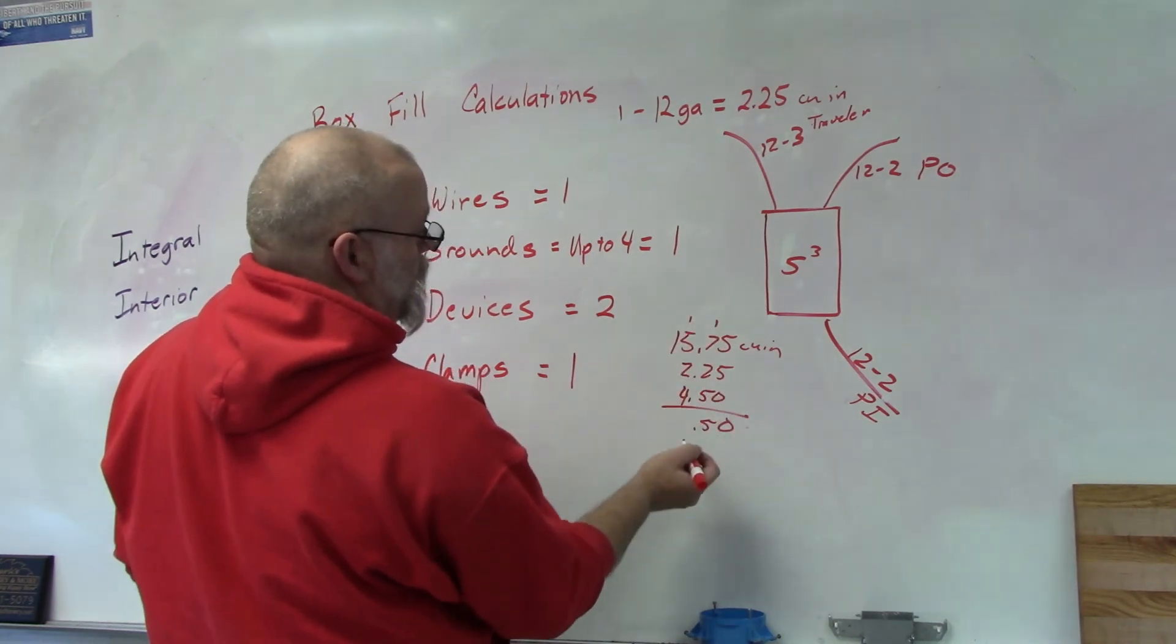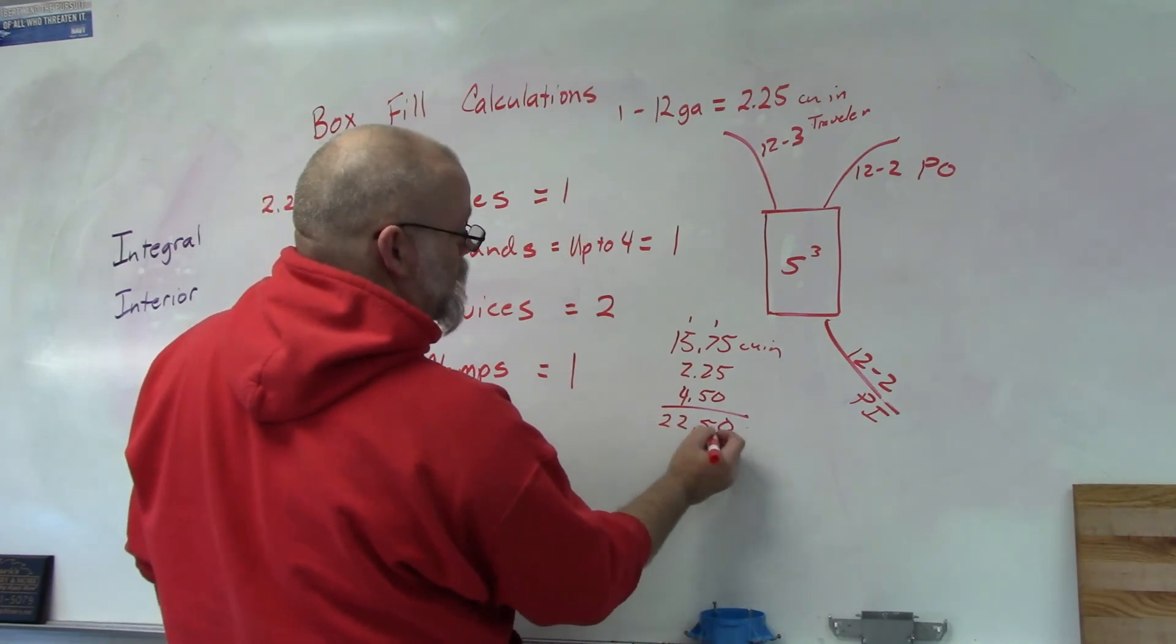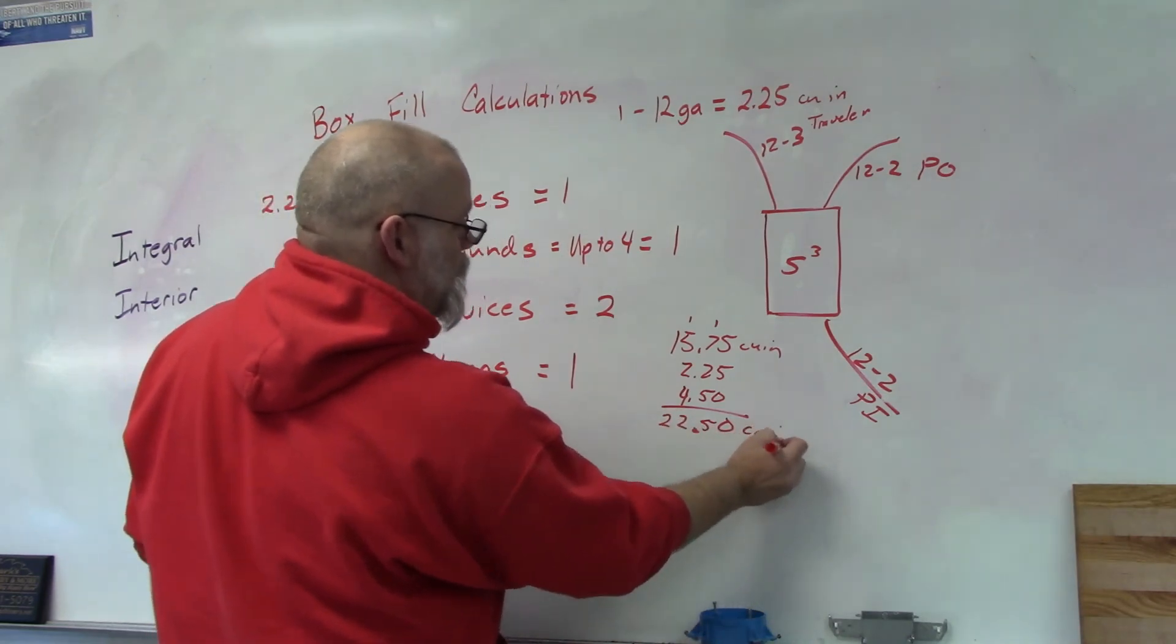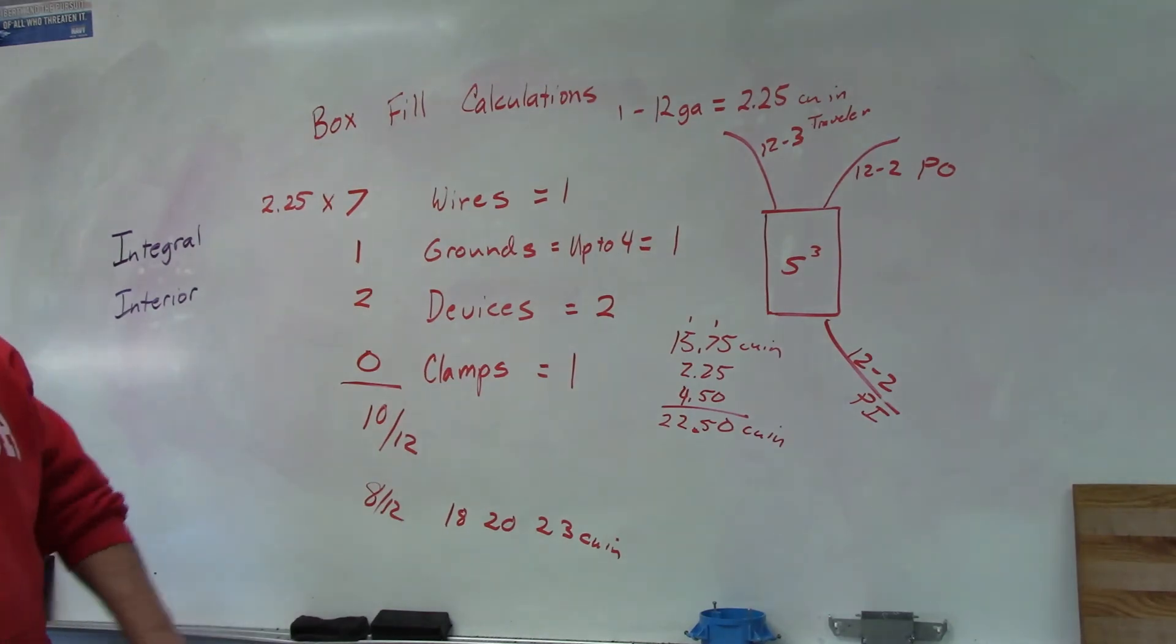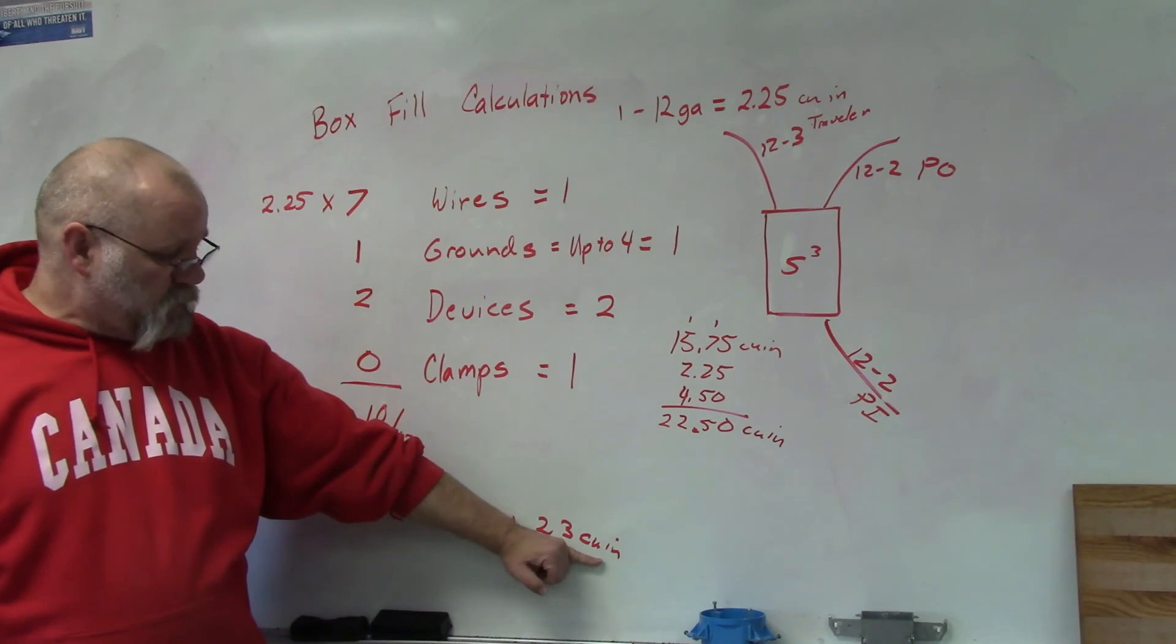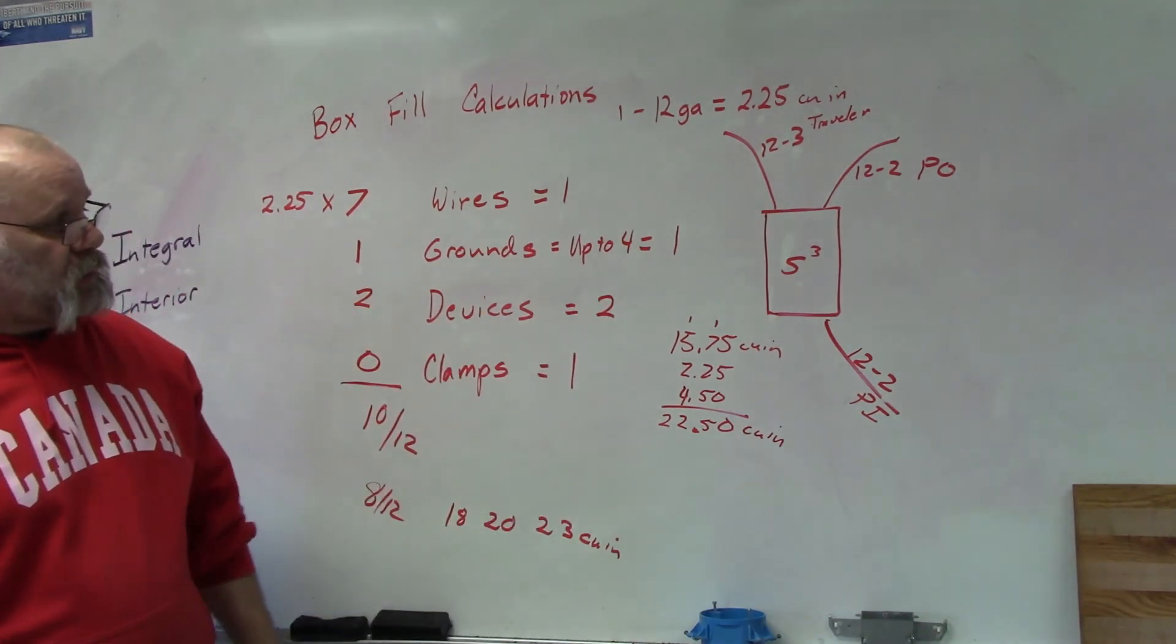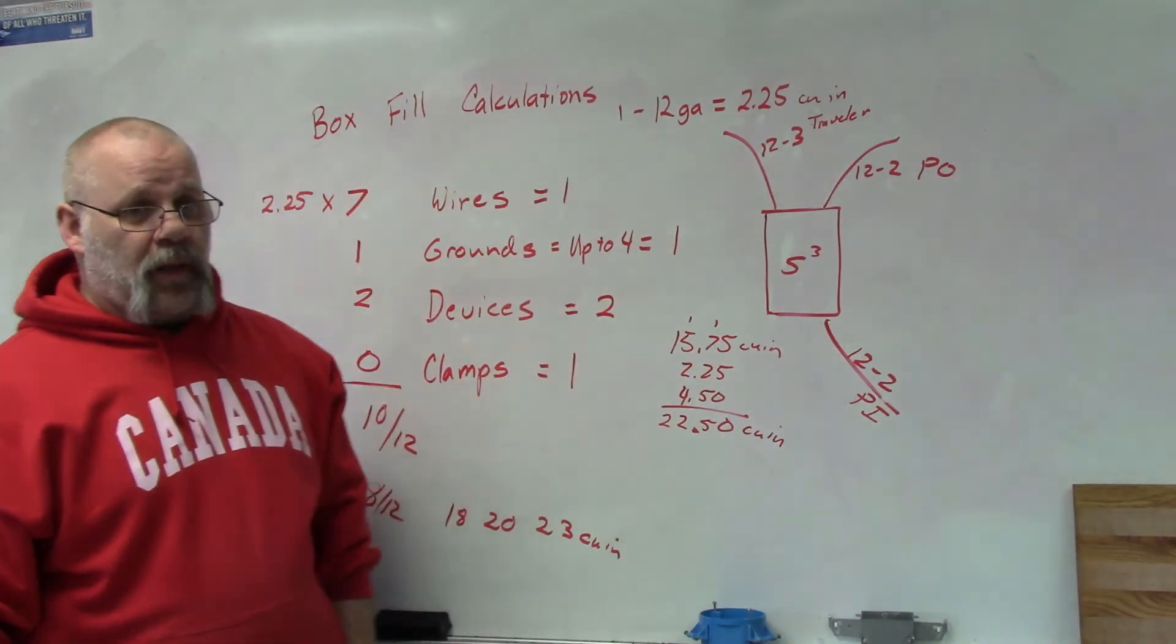If I add them all up, 15, 12, 22, 22.5 cubic inches. So in order for this setup to work, I would have to get the largest 23 cubic inch box in order to run this wiring setup for a three-way switch.